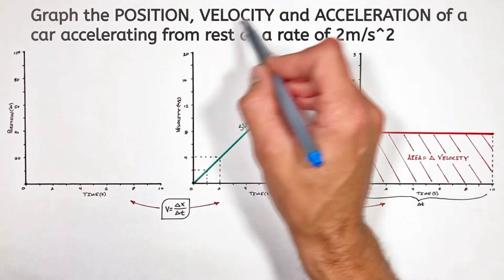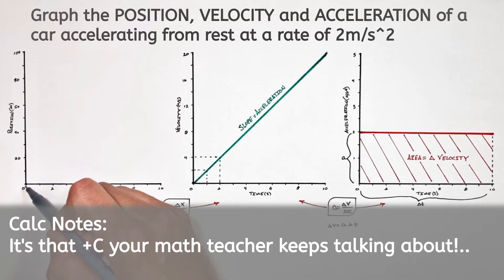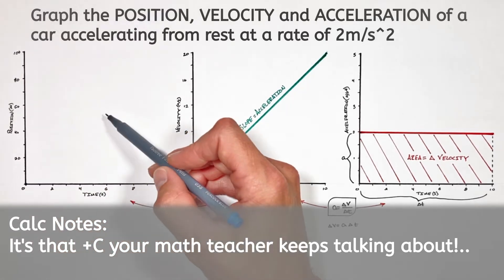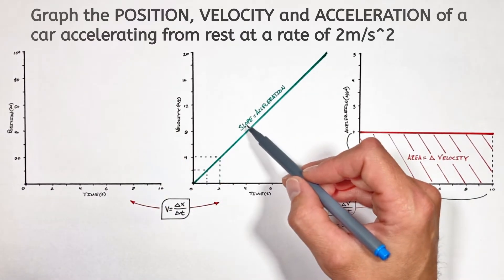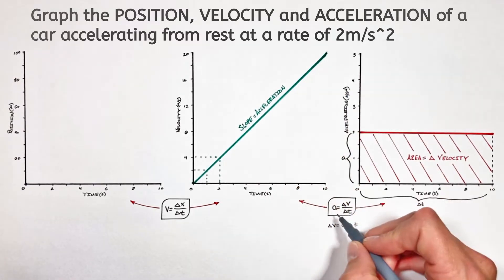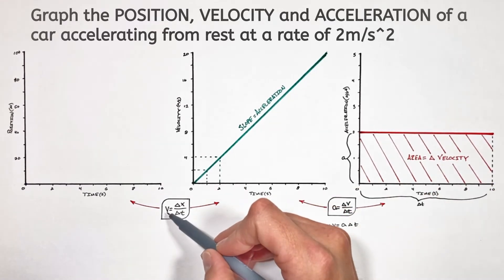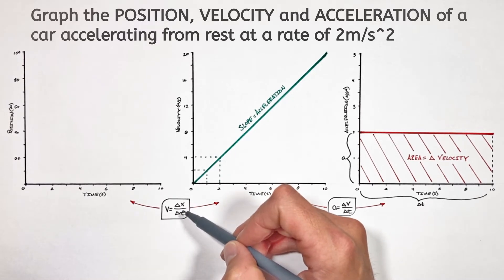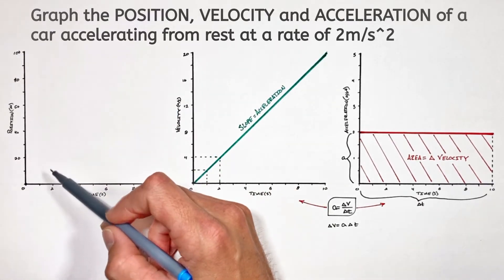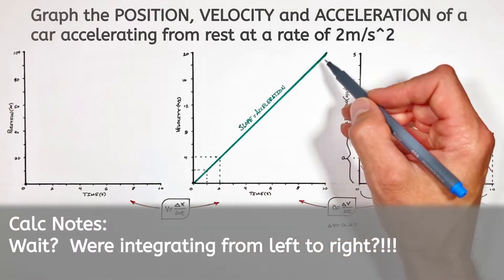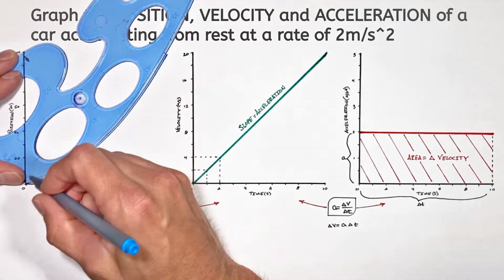Now moving on to position, since we weren't given an initial position anywhere in our problem, we're just going to assume the car starts at position zero. The slope on our velocity versus time graph was acceleration because acceleration made a change in velocity over time. And much in the same way, velocity is going to produce a change in position over a change in time. Ultimately, the slope of our position versus time curve equals the value of velocity. So if we start with very little velocity and finish with large velocity, we're going to start with zero or very little slope, and this line is going to get steeper and steeper.